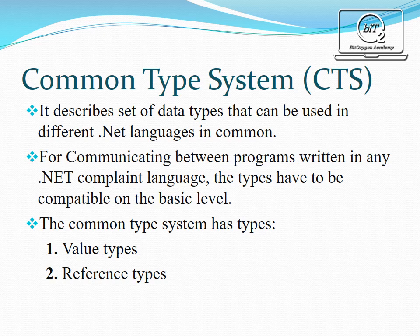There are two types of CTS. First is value type. Second is reference type. Value types include simple types such as character, int, float, enum types and struct types. Value types directly contain their data, and instances of value types are either allocated on the stack or allocated inline in a structure.